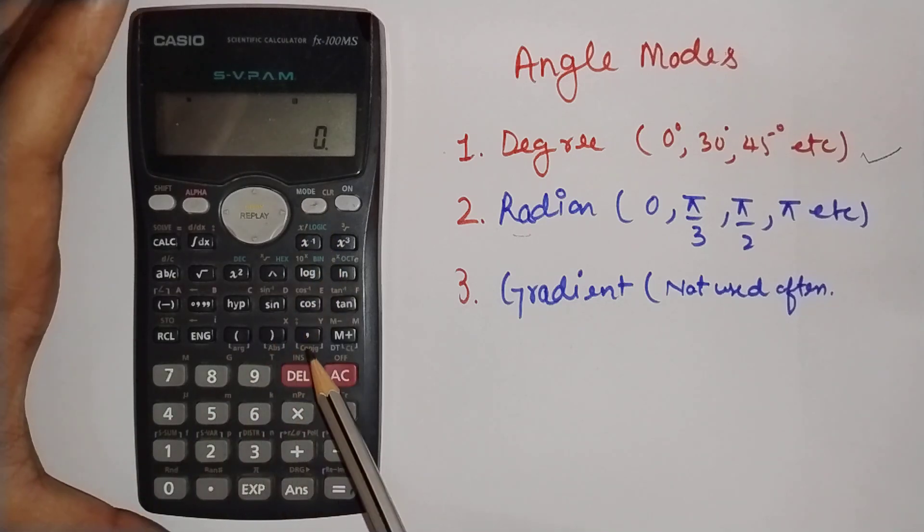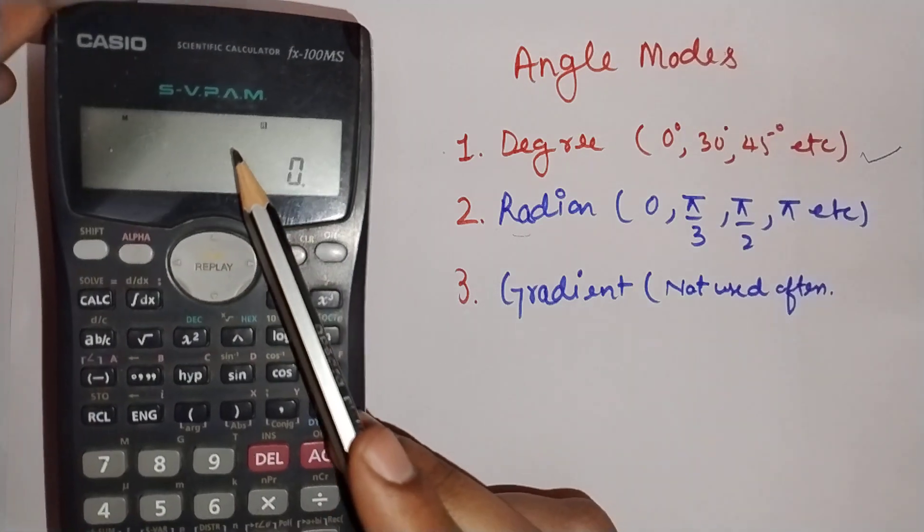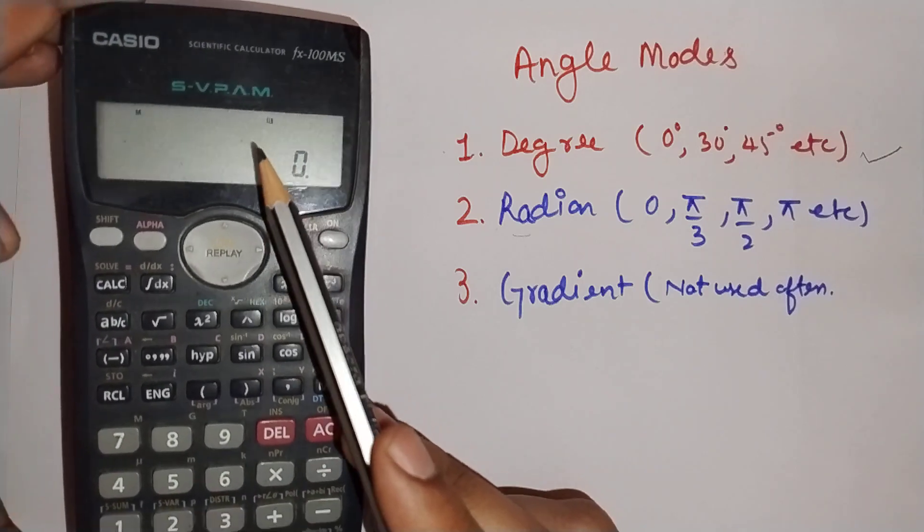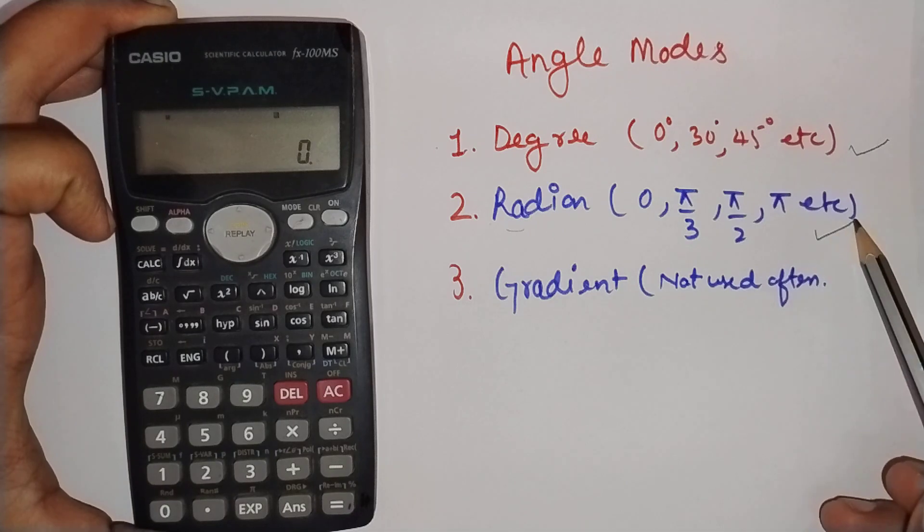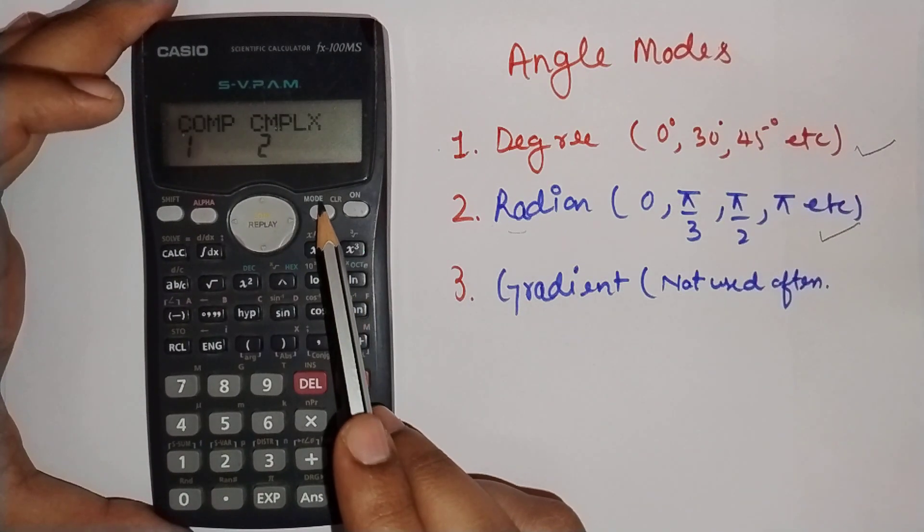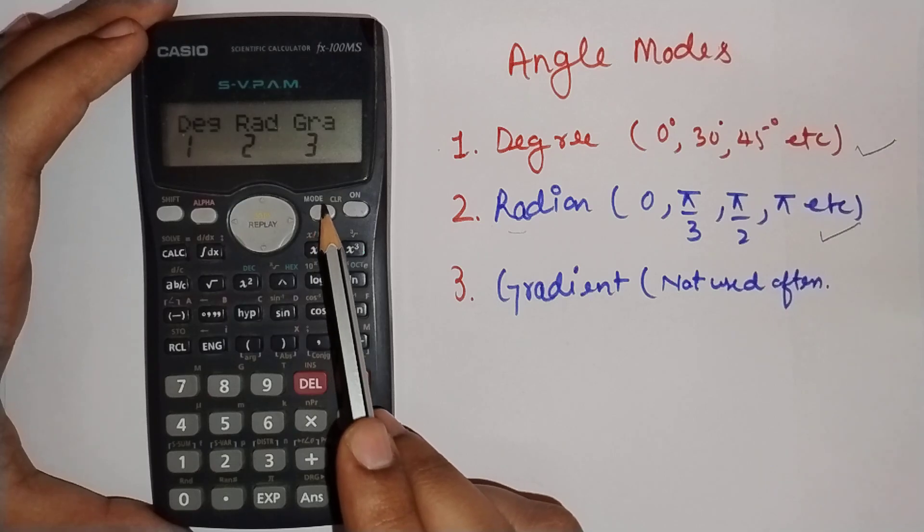Now you can see a small 'r' on the screen, which means the calculator is working in radian. To change to gradient, which is not used often, press 3.